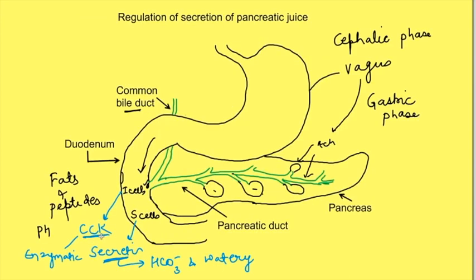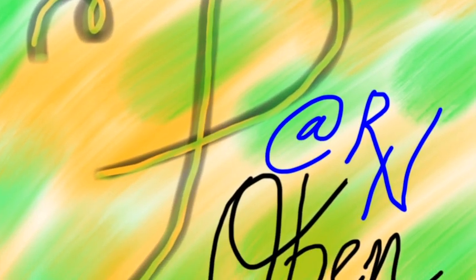Even though CCK is the major stimulator of pancreatic enzyme secretion and secretin is the major stimulator of bicarbonate secretion, both also help each other by increasing each other's function.